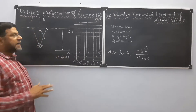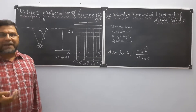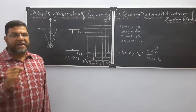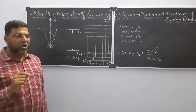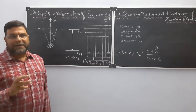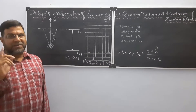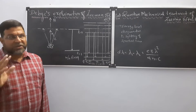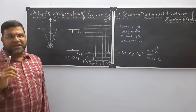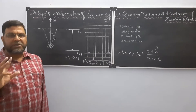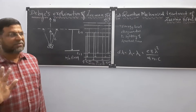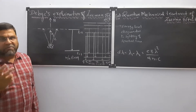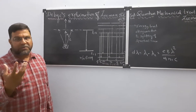Now we are going to see Debye's quantum mechanical treatment of the Zeeman effect. This is explained on the basis of the electron spin hypothesis. In the third unit, when I dealt with the vector atom model, I told you it is explained on two hypotheses: one is the spinning electron hypothesis and the other is spatial quantization. Here we are going to use the spinning electron hypothesis. The spin of an electron is equal to the spin of a top.